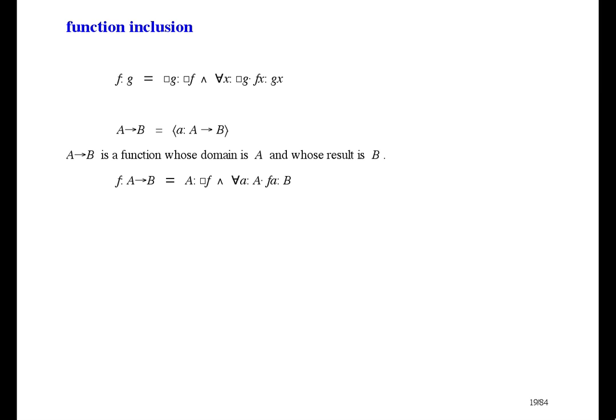Using the definition of function inclusion, f is included in a arrow b when a is included in the domain of f and, for any element of a, the result of f is included in b. So we could say that a arrow b is all those functions whose domain is at least a and whose result is at most b.